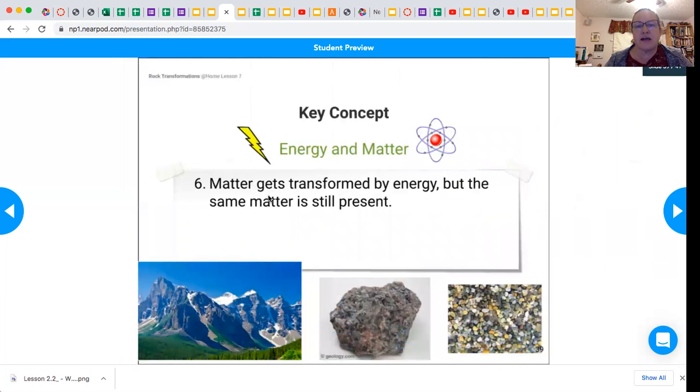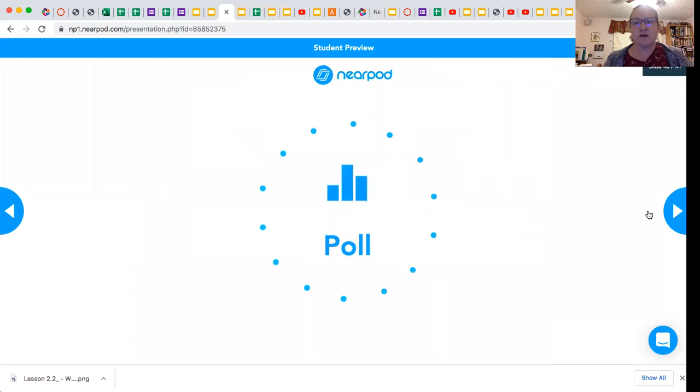And then matter gets transformed by energy, but the same matter is still present. So the same atoms are contained in any of these rocks. So this rock formation is the Rocky Mountains, which is made up of granite, which then will get weathered into sediment. But even when it's super tiny, it still has the same matter as the rock did, the mountain more specifically.